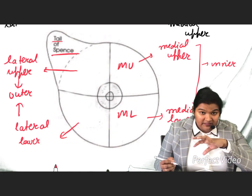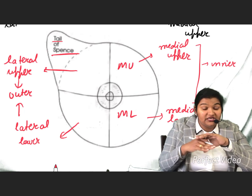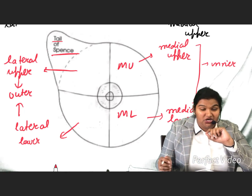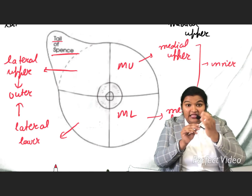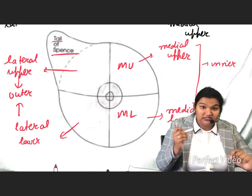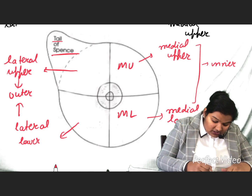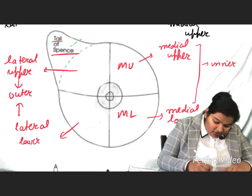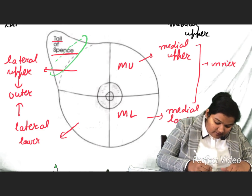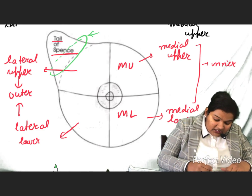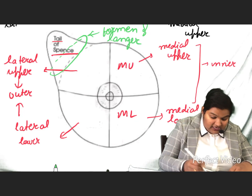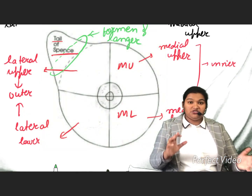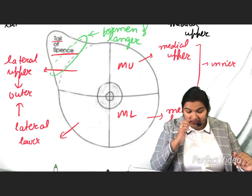This tail of Spence passes through a foramen in the fascia, and this foramen is called the foramen of Langer. So this is the situation and the quadrants of breast.